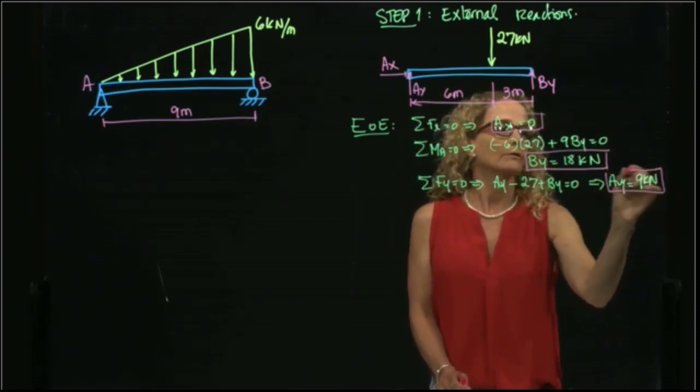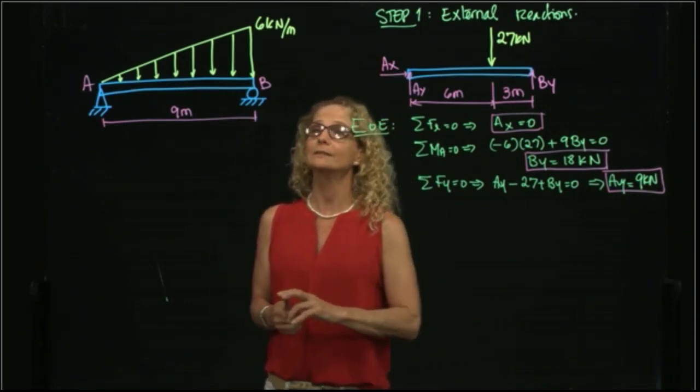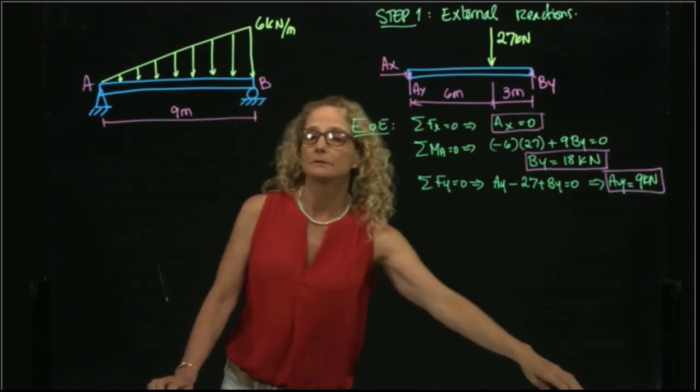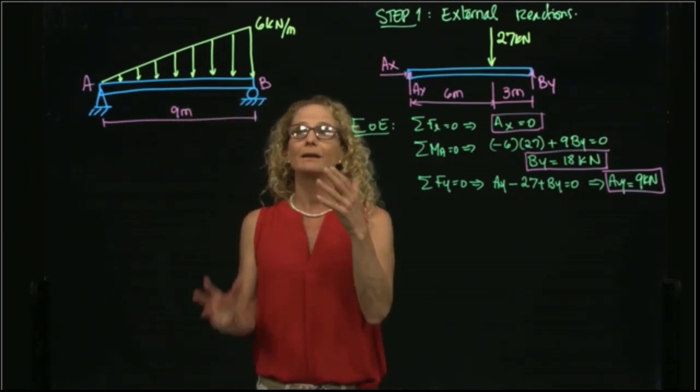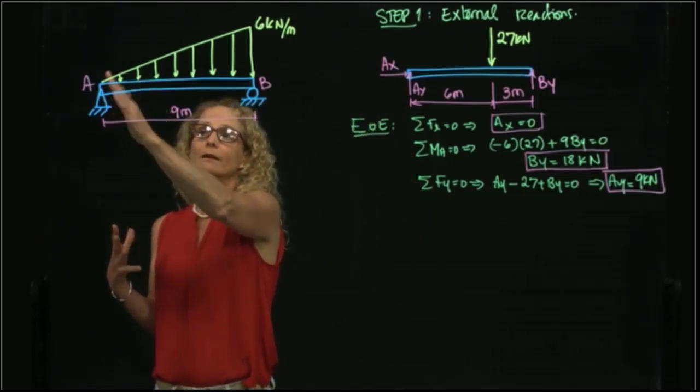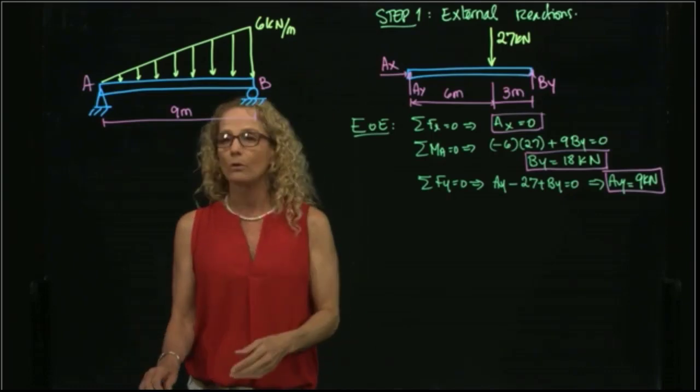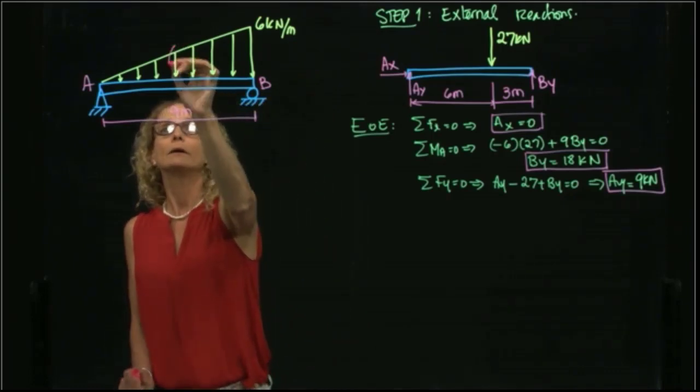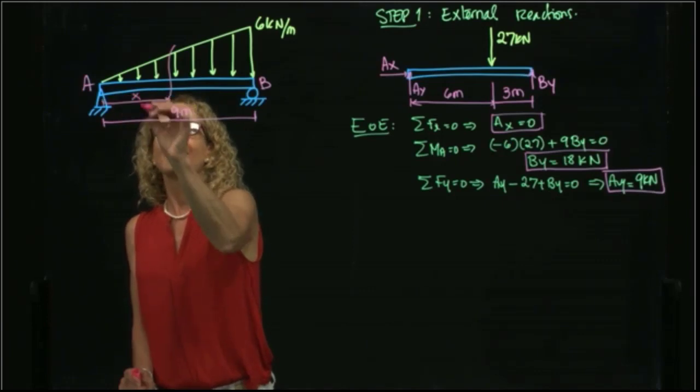Now that we found the external reactions, we have to analyze our internal reactions. As we see, we will use the section method, and we will cut our beam as many times as we have events. We have only events at the beginning of the beam, at the end, and only one distributed load. So I will cut in any section of the beam at a distance X.